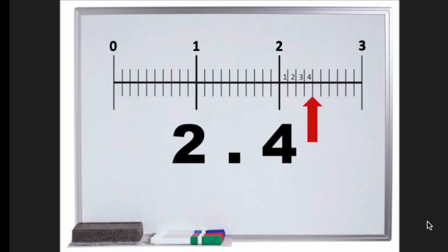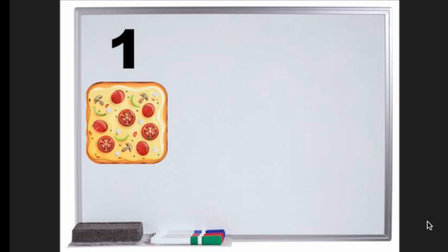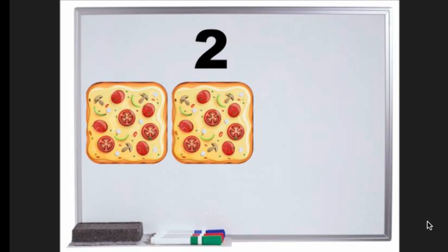Let me show you how this looks using pizza. Here is where our decimal point would go if we knew that we had more than 2 pizzas and less than 3 pizzas.